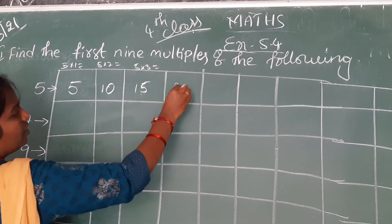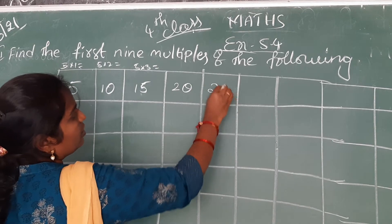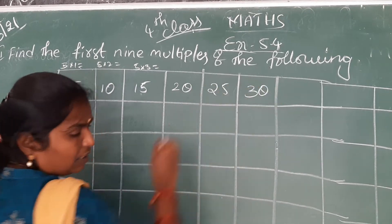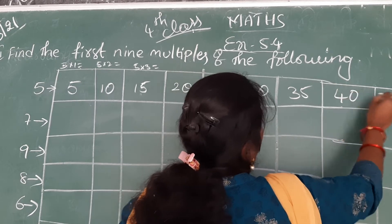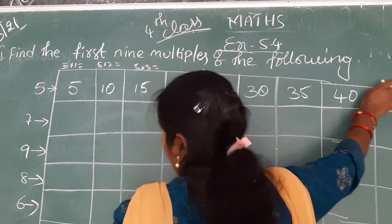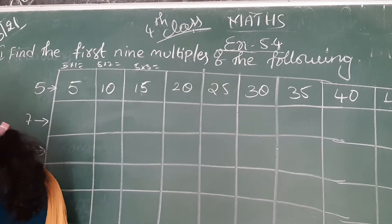5 fours are 20. 5 fives are 25. 5 sixes are 30. 5 sevens are 35. 5 eights are 40. 5 nines are 45. Up to 9 you have to write, okay?